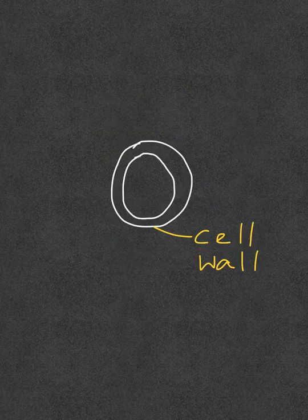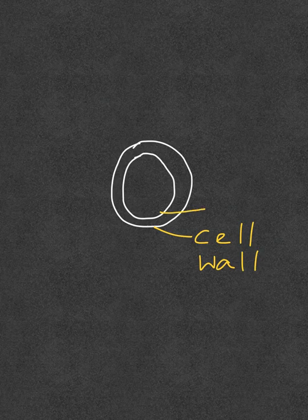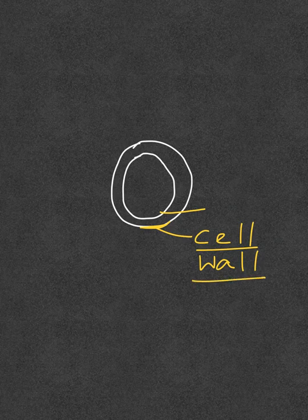Plant cells, in addition to having a cell membrane, also have an extra protective layer known as the cell wall. This is absent in other eukaryotic cells.